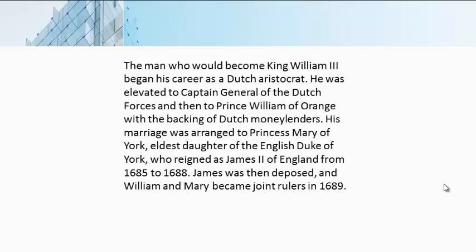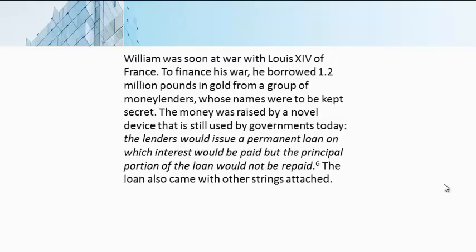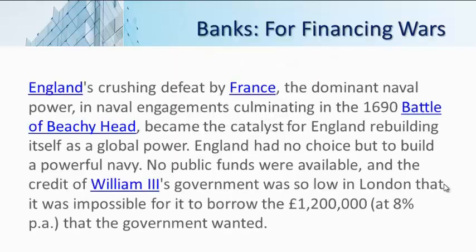They first arranged his marriage to Princess Mary of York. Then James was removed from power and William and Mary became joint rulers in 1689. Soon there was the Nine Years War with France. For this purpose he needed money, which he got in return for creating the Bank of England. Basically England was defeated by France, who had the bigger navy in 1690, so England had to borrow money to build a new navy. But King William had no money and could not borrow the 1.2 million pounds that they wanted.